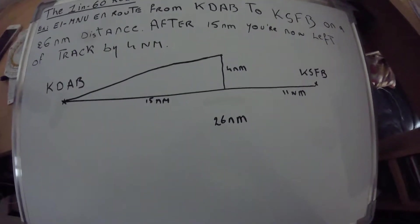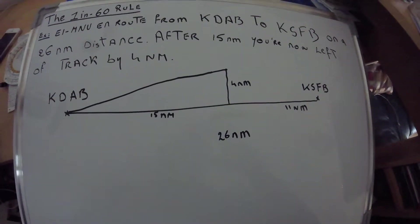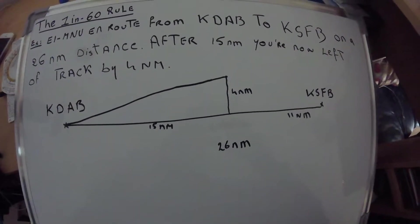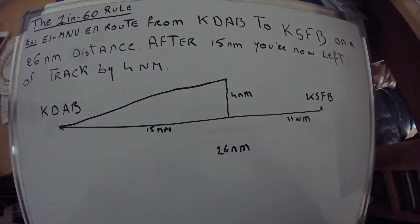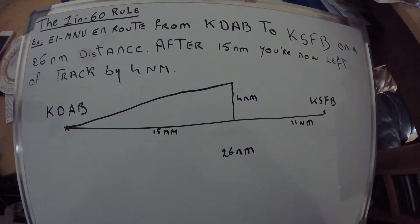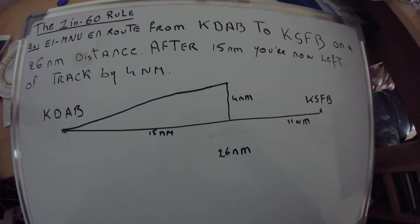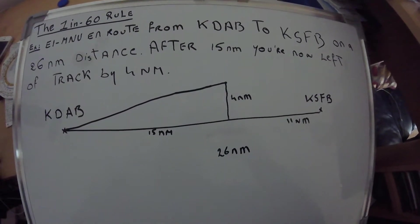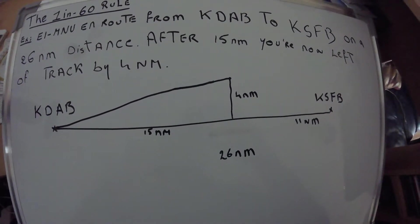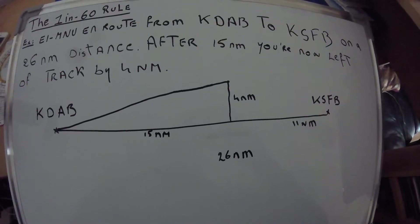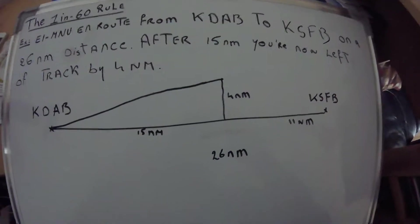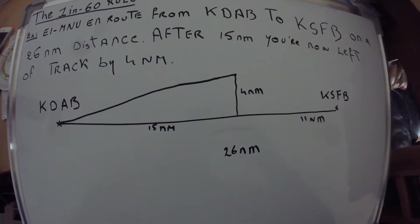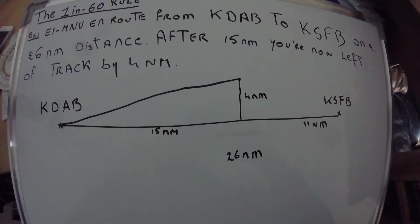Hi everybody, this is Pilot Knowledge Transfer. Very quickly, I'm going to describe the 1-in-60 rule navigation. This is just at the PPL level. I already put everything on the table just to be very quick. In this example...